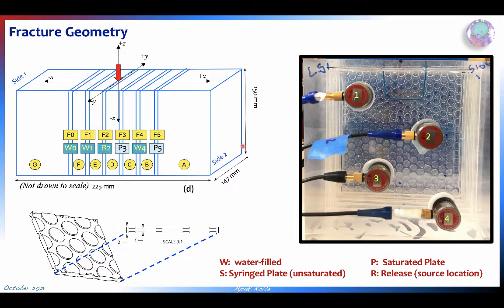In order to guarantee that we do have contact across these fractures we have inserts. These were printed on a 3D printer and basically have raised discs which, when you have partial saturation, will actually maintain a meniscus, so there's going to be a meniscus coupling when it's partially saturated.